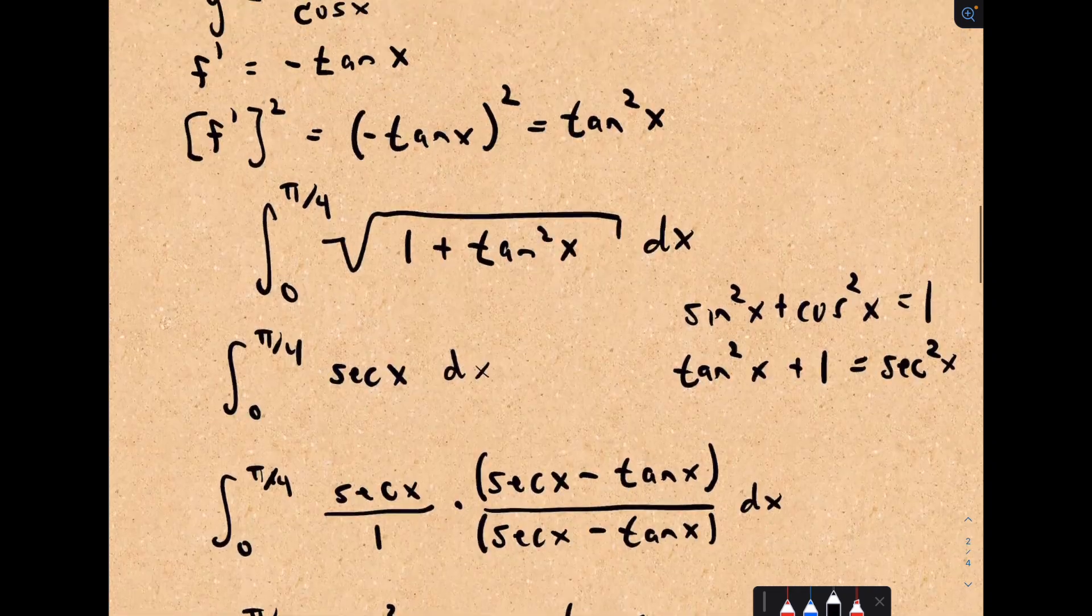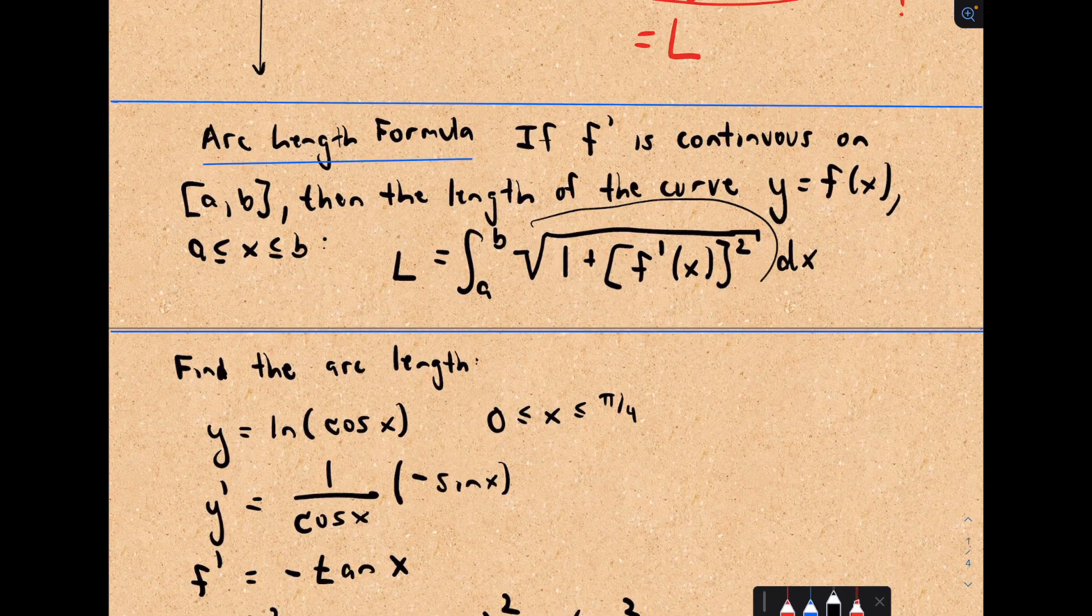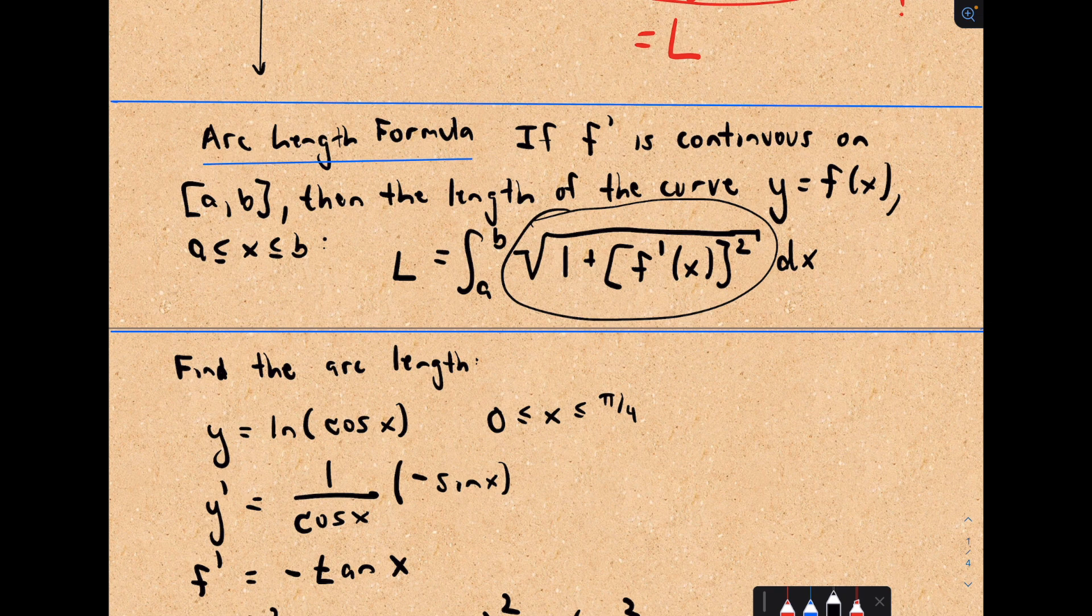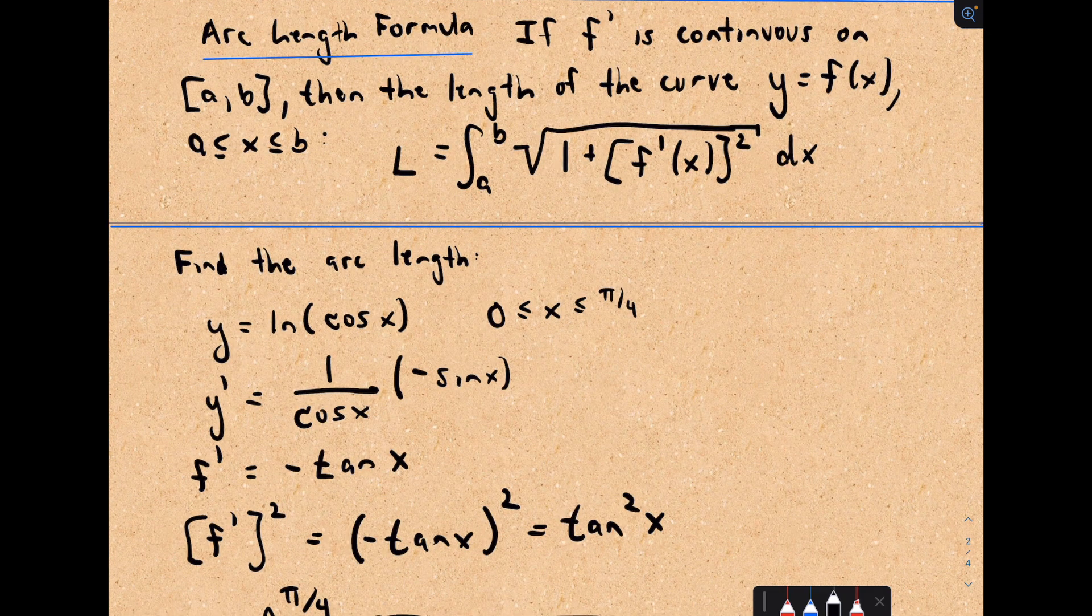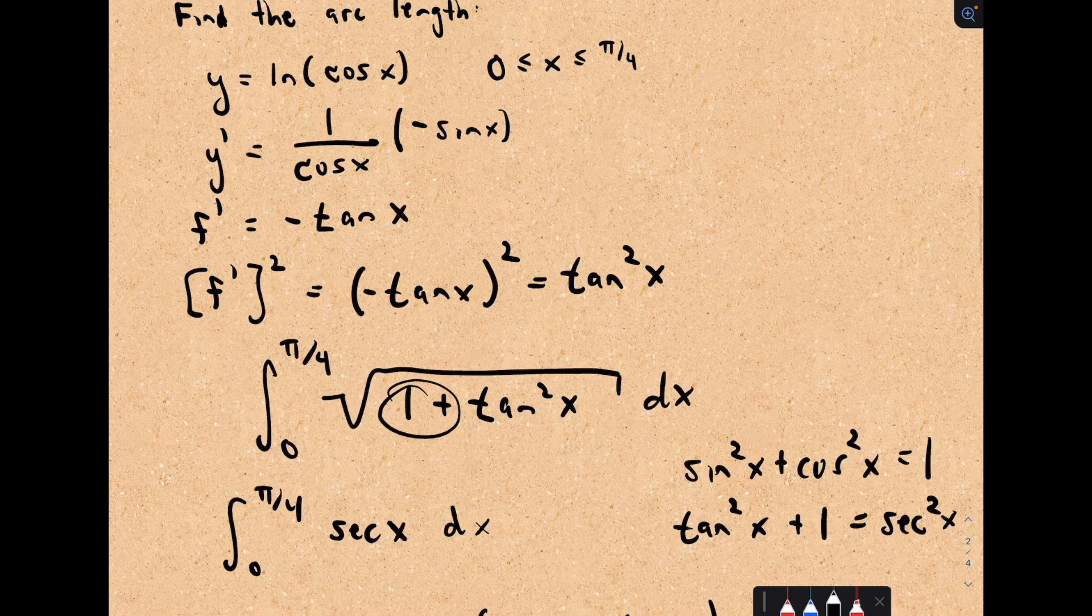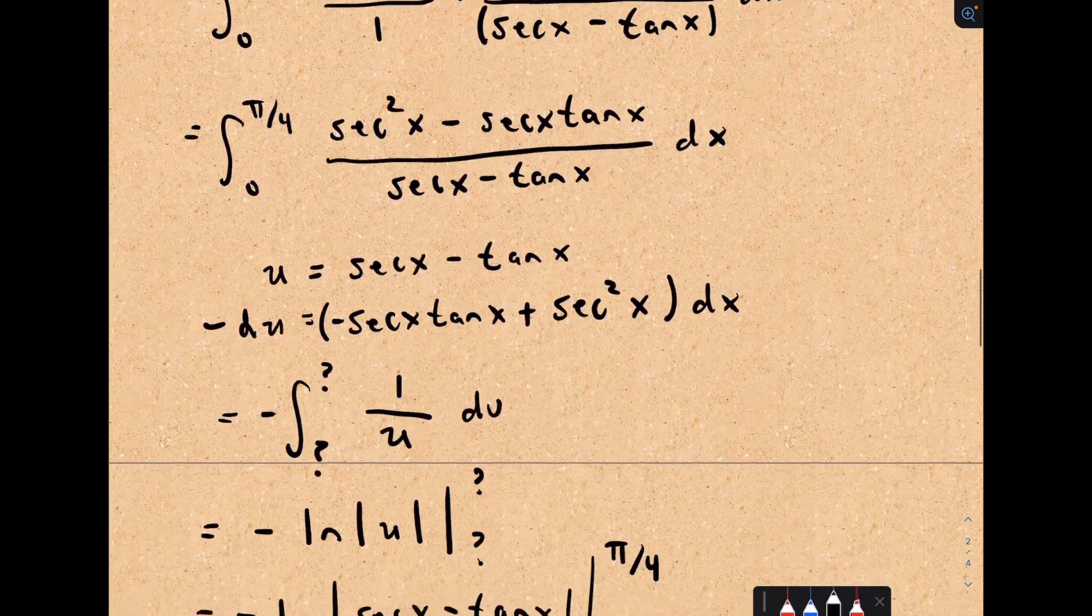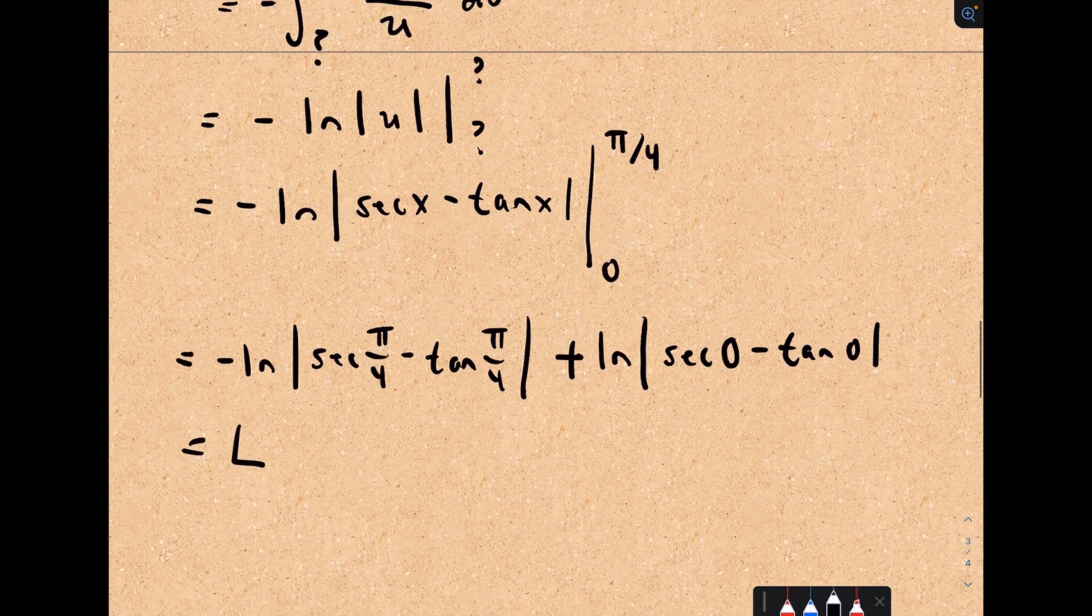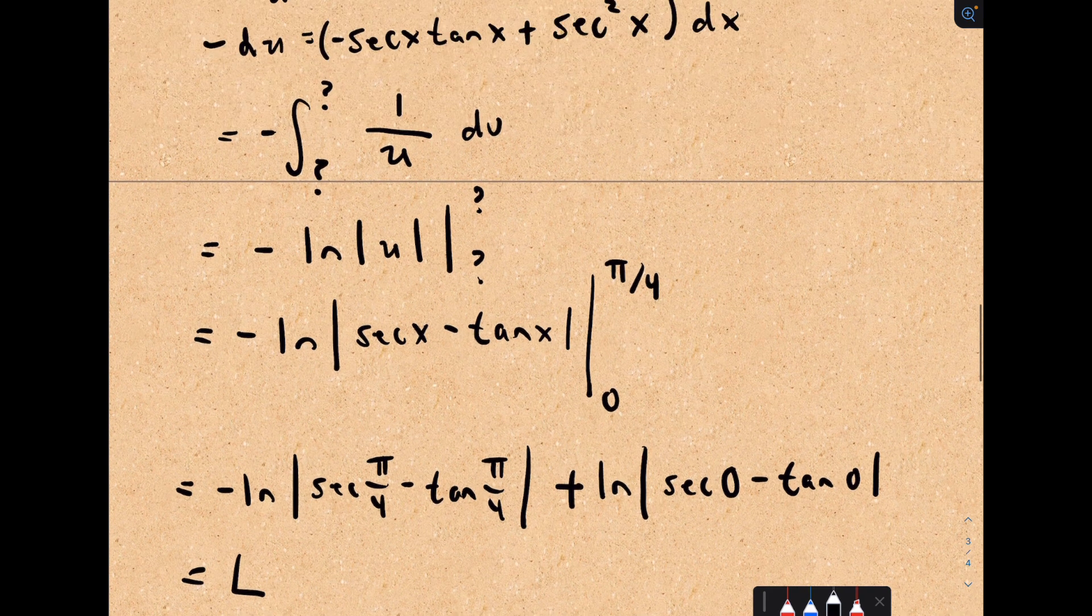There's nothing particularly tricky about getting things set up. Sometimes getting these questions set up is half the battle. These are relatively straightforward. Take a derivative, just like we did. Square it, add 1 to it, stick it underneath the square root, and hopefully what you have to integrate is not too terrible. Last comment, obviously the arc length should be some positive number. If you're getting some negative number out at the end, you've mixed up something somewhere, so be careful about that.